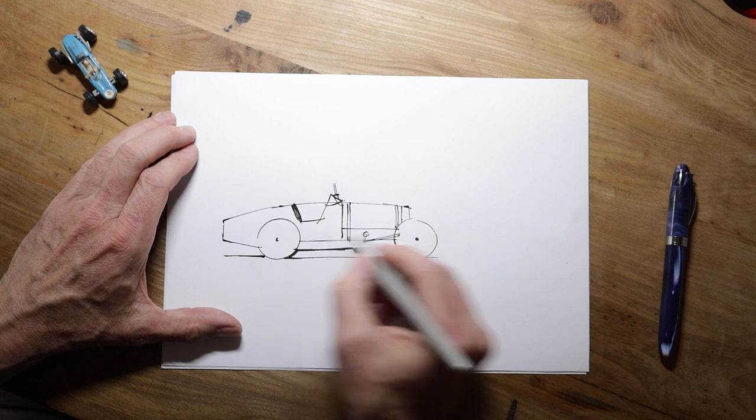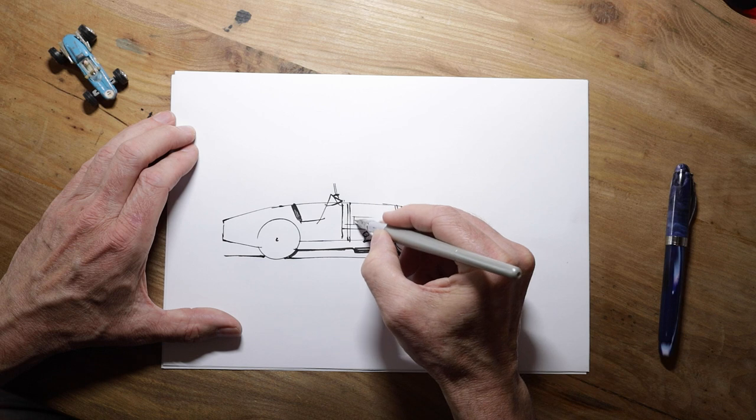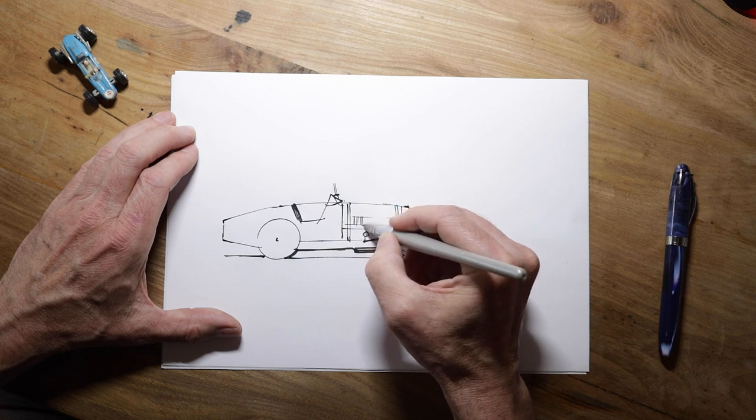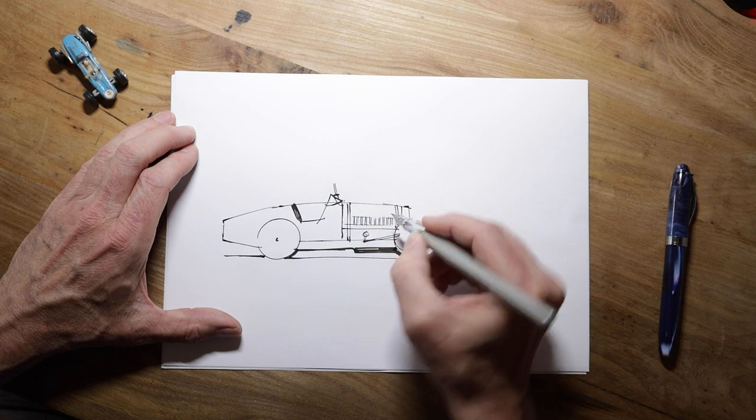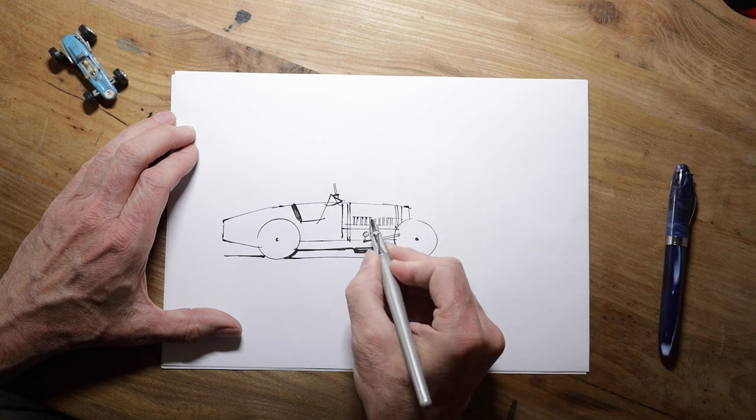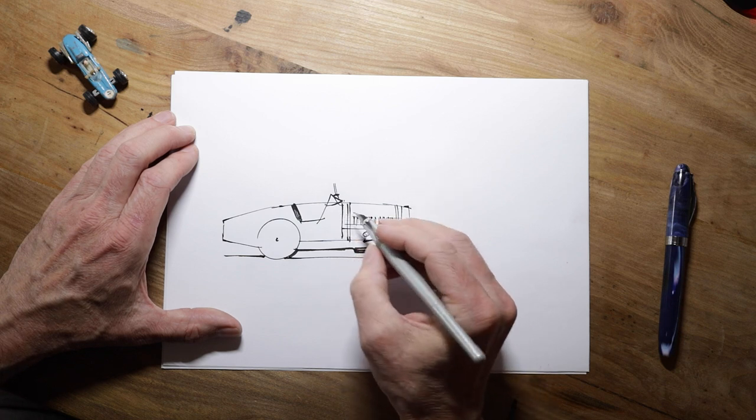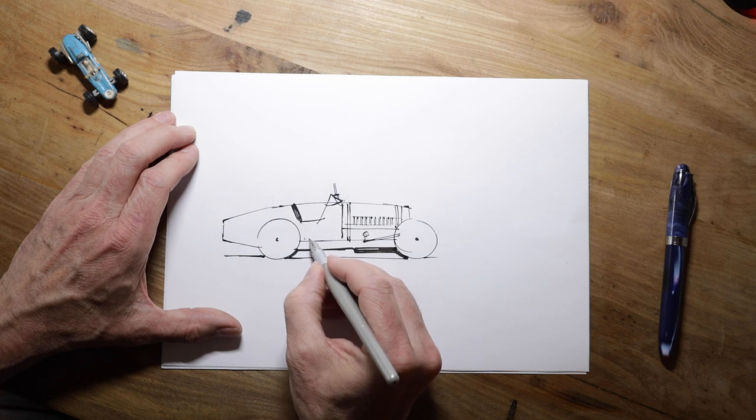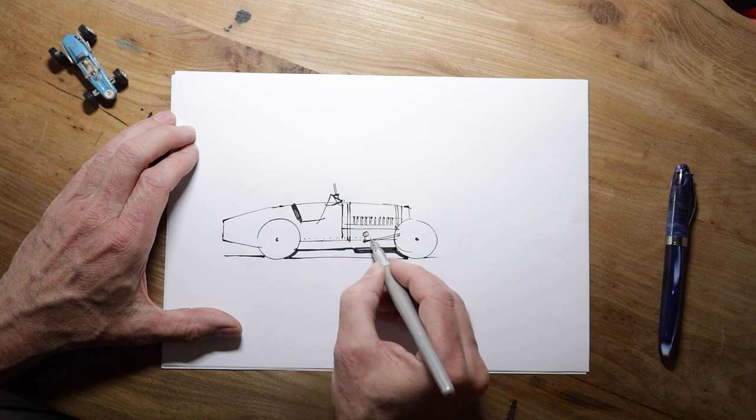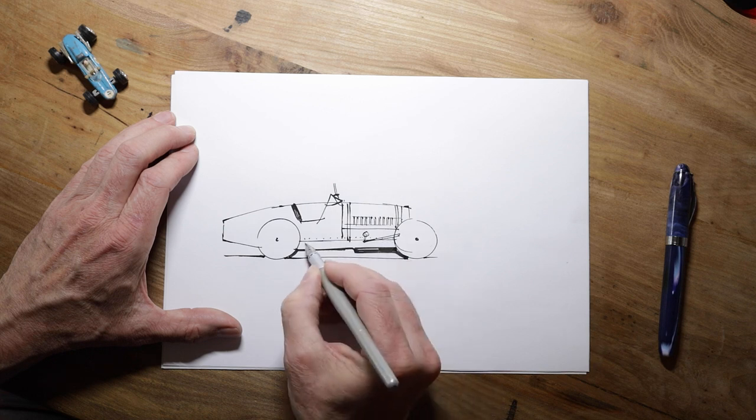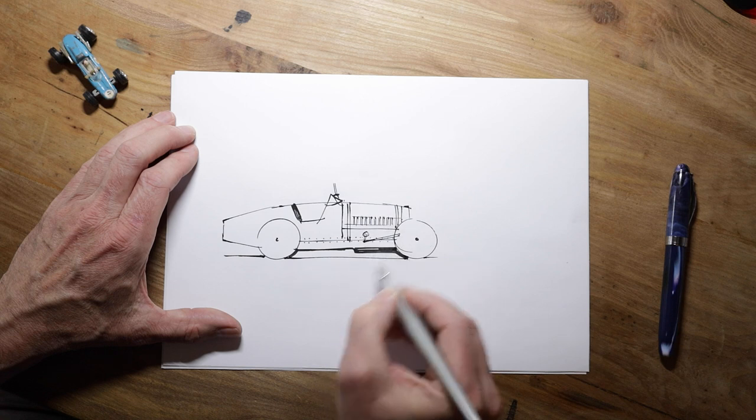And now we need some louvres. There's a row of these. So I'll just do these pairs of parallel lines. A bit of shadow. And now we've got rows of little, not quite rivets. They're little pins that you use to wire the body together. All the way along there.